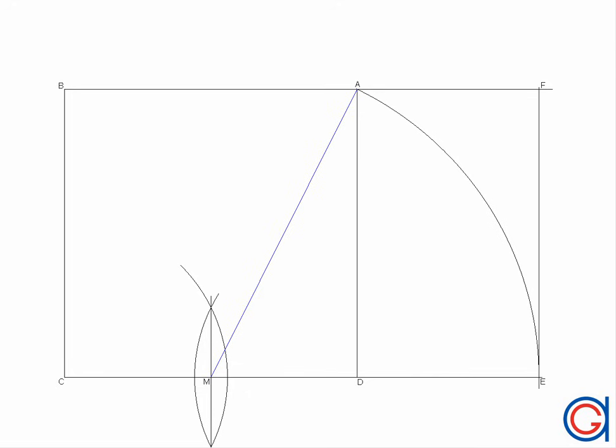The golden rectangle BCEF and the smaller golden rectangle AFED.